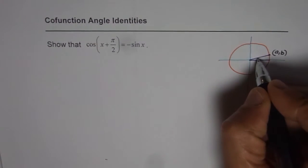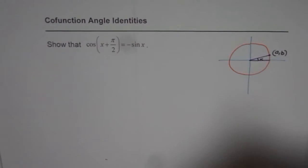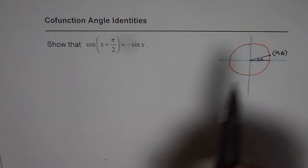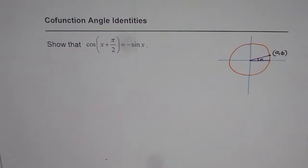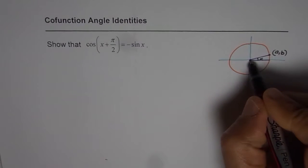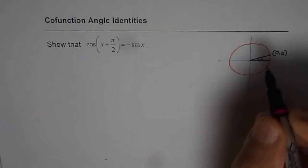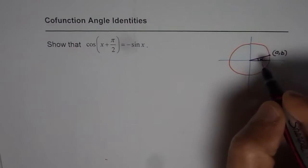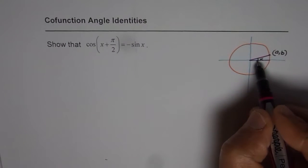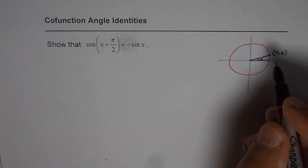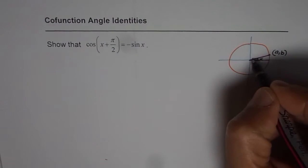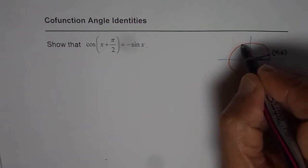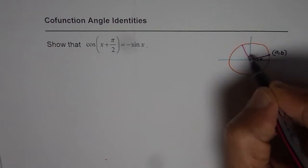So this angle for us is x. Now when we say x plus pi by 2, it means what? It means that the terminal arm, which is this arm at present making an angle x in standard position, is rotated counterclockwise by 90 degrees. So if you rotate this by 90 degrees, it will take this position. So this is 90 degrees.